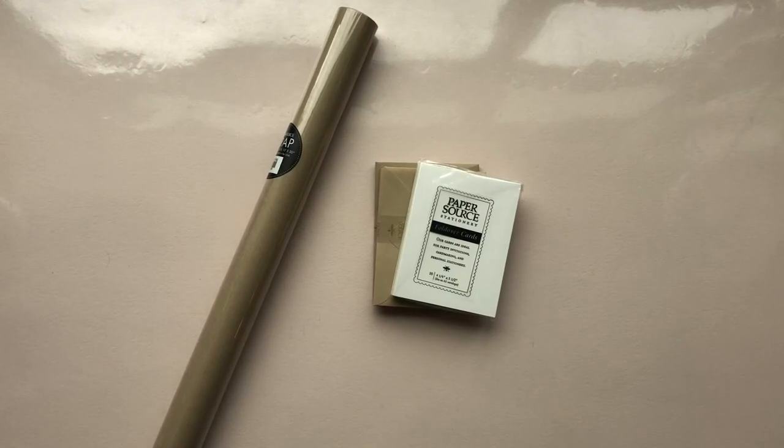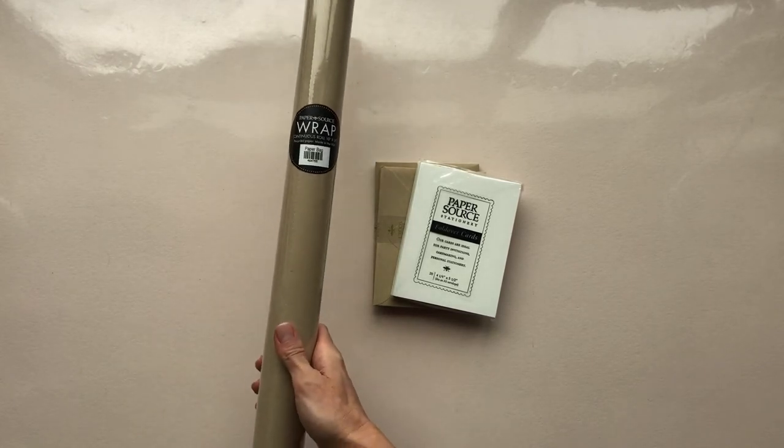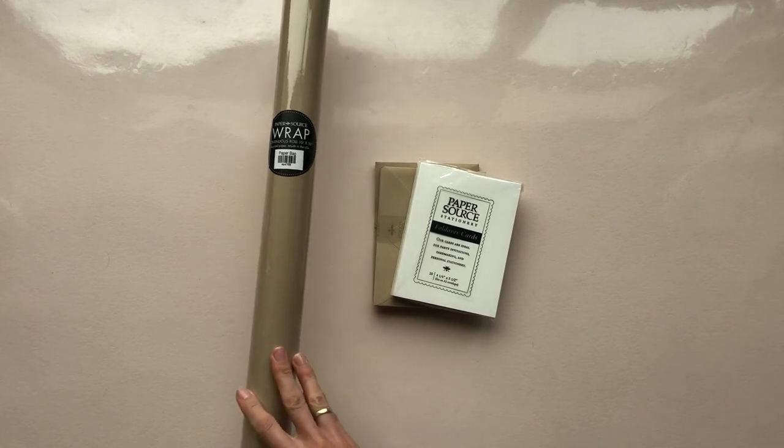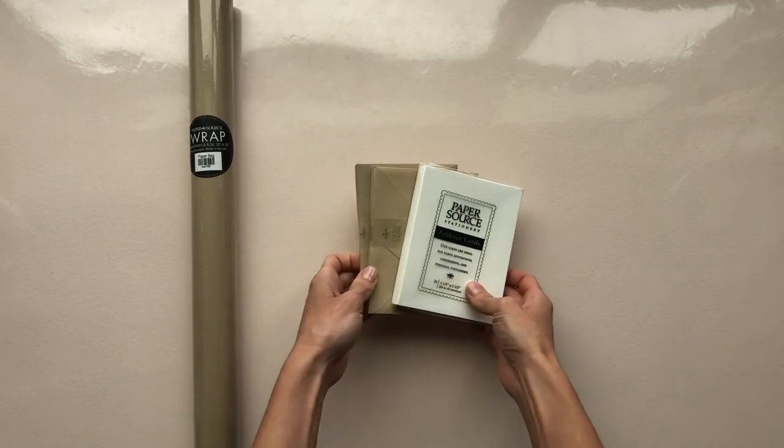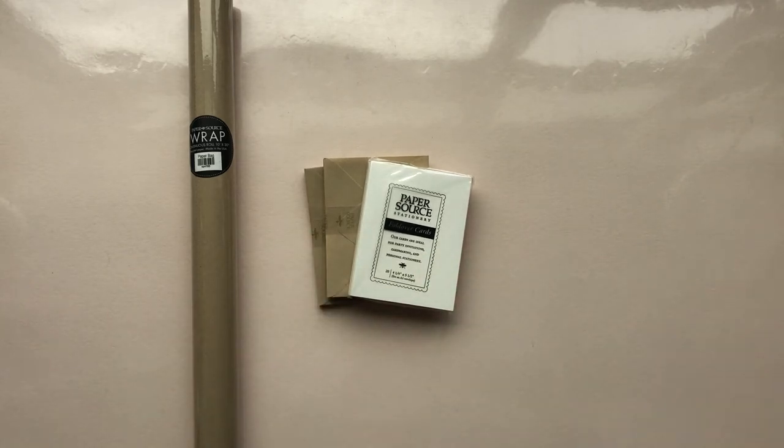You can also print on stationery or gift wrap, so you can find a solid roll of gift wrap in a color that you like and then print on those sheets, or you could select cards and envelopes from the paper source paper bar and create your own stationery.